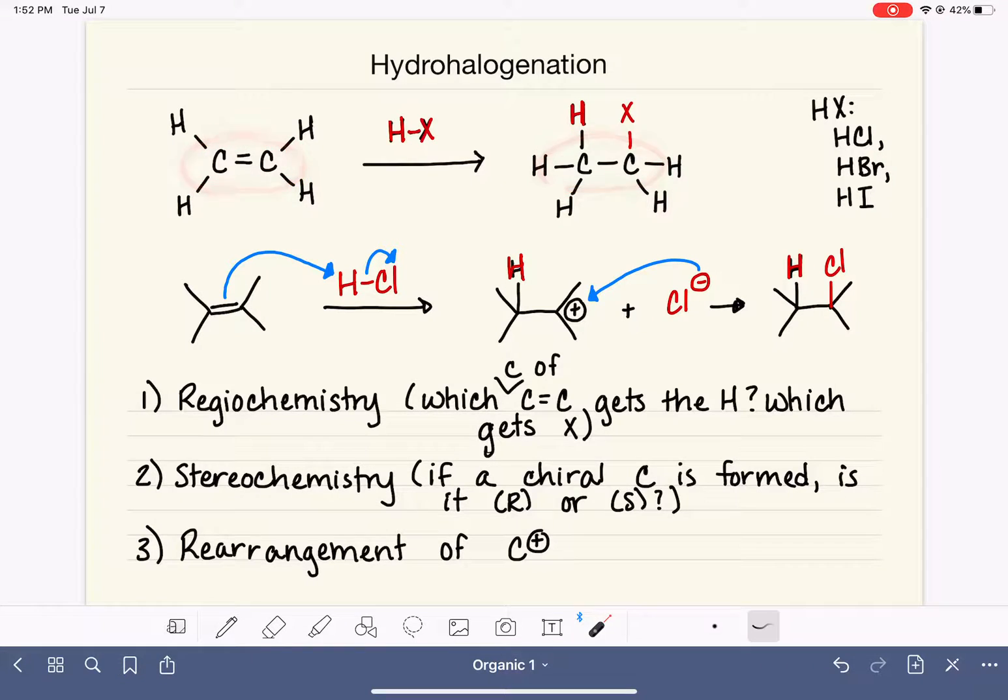This converts the alkene to an alkane. We add both the hydrogen and the halogen to the carbon-carbon double bond. In this reaction, there are three different variables that we need to consider while predicting the products: regiochemistry, which is looking specifically at which of the alkene carbons will get the hydrogen and which one will get the halogen. And that's what we're going to talk about in this video.